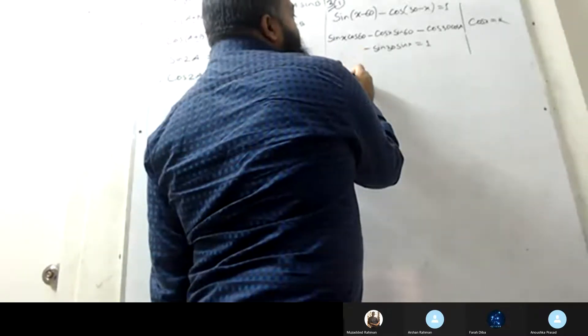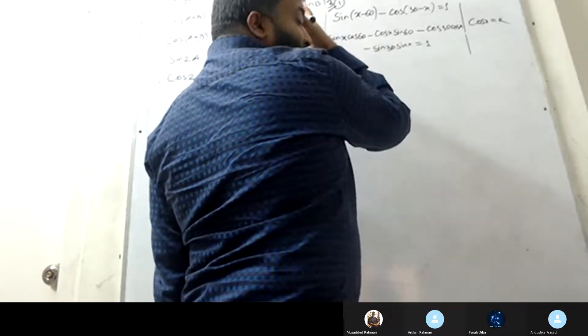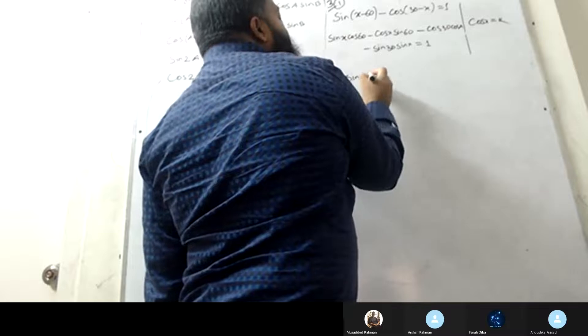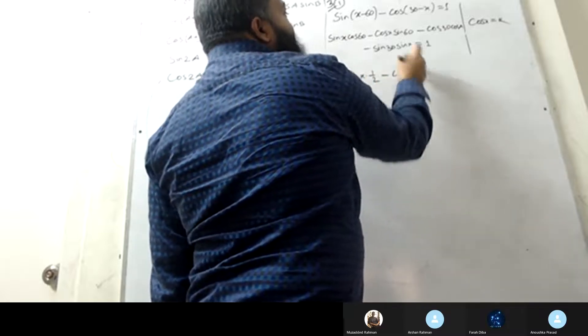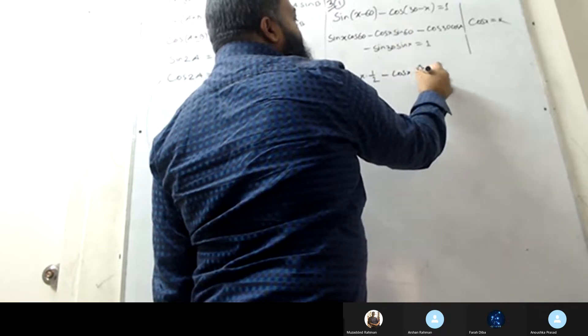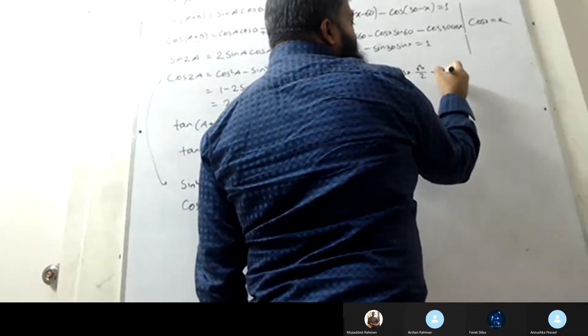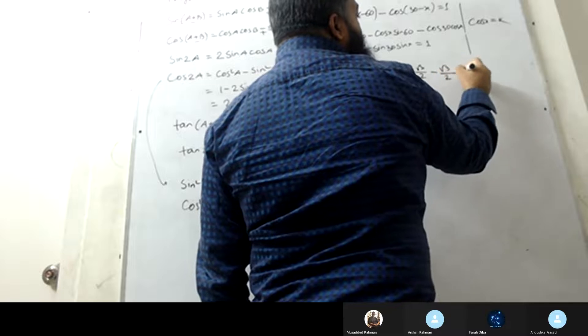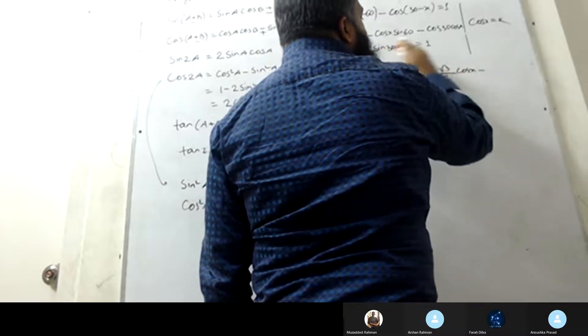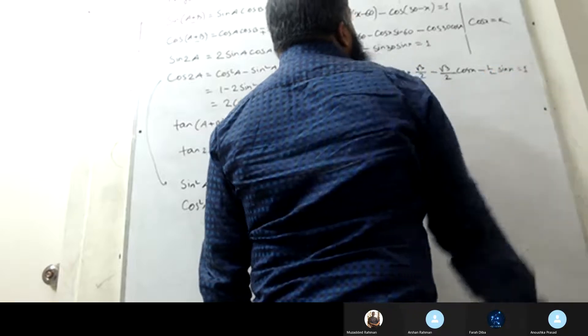Substitute the values. Sine x cos 60, cos 60's value is half, minus cos x sin 60, sin 60's value is root 3 by 2, minus cos 30, cos 30 is root 3 by 2 times cos x, minus sin 30, which is half sin x, equals to one.